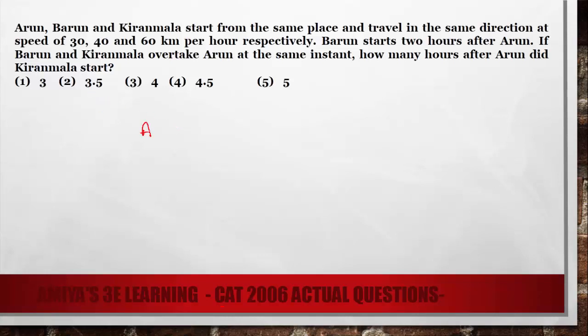We have three persons: Arun, Barun, and Kiranmala. The speeds of these persons are 30 kilometer, 40 kilometer, and 60 kilometer.